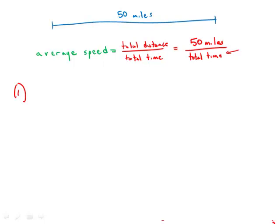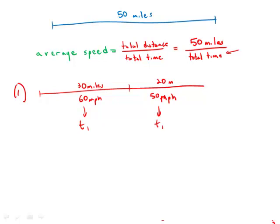Now statement number one tells us, breaks the trip into two legs, and tells us in the first 30 miles, she goes 60 miles per hour. Then in the last 20 miles, she goes 50 miles per hour. Well, we could figure out the time in each one of these legs very easily, and then once we have those two times, we could add them together, and we would get the total time.